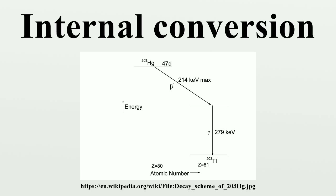Electron capture, like beta decay, also typically results in excited atomic nuclei, which may then relax to a state of lowest nuclear energy by any of the methods permitted by spin constraints, including gamma decay and internal conversion decay.